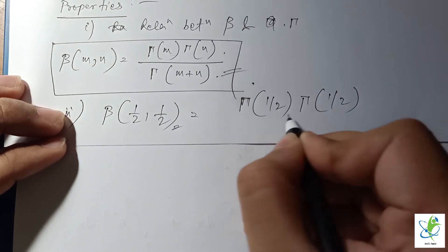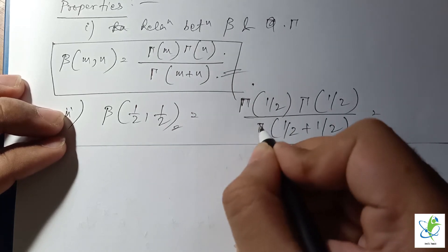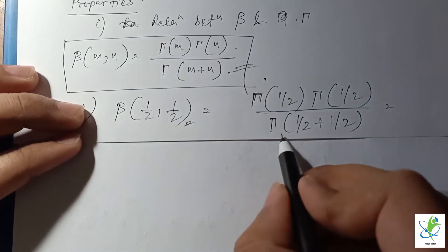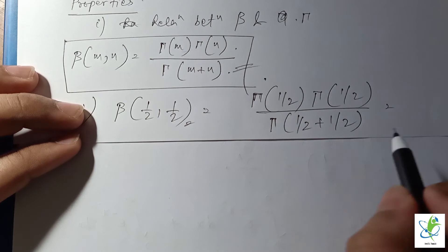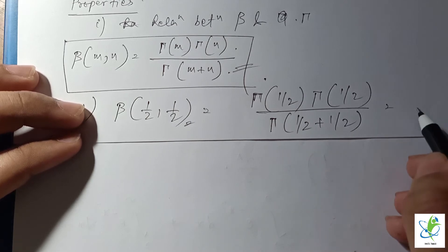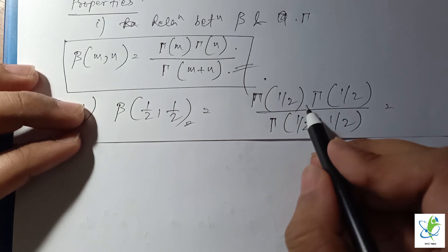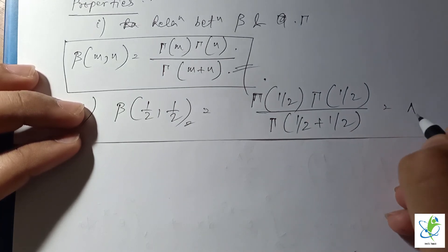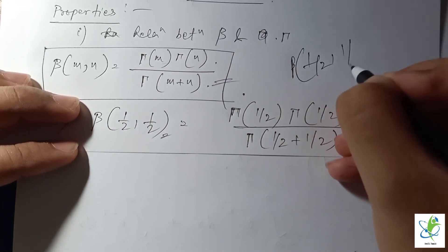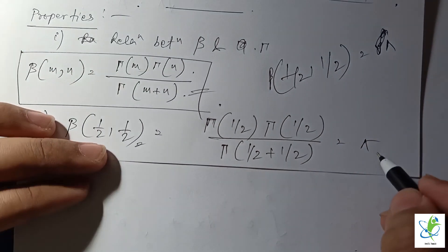We already know the value of Γ(1/2) is √π, and the value of Γ(1) is 1, so the denominator is 1. Therefore β(1/2, 1/2) = √π · √π = π. So the value of β(1/2, 1/2) is π.